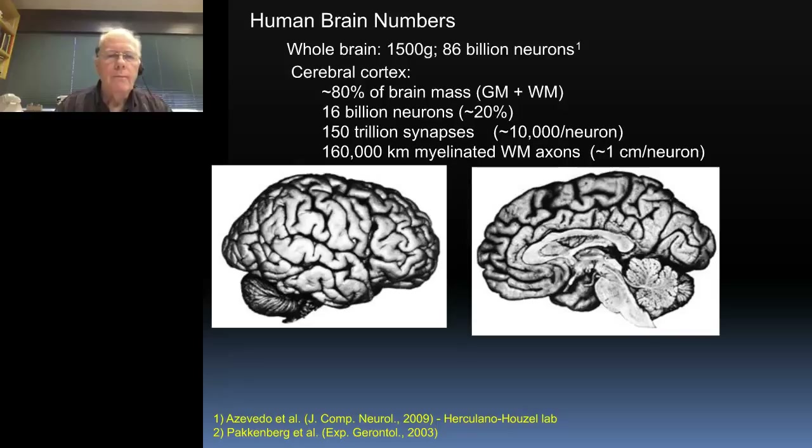So the human brain has some interesting numbers associated with it. The dominant structure is the cerebral cortex, which contains about 80% of the tissue mass but only about 20% of the 80 billion neurons in the whole brain. That's because it's chock-a-block full of synapses — literally more than 100 trillion of them — and it's also interconnected with other regions of the brain through literally 100,000 miles of white matter.